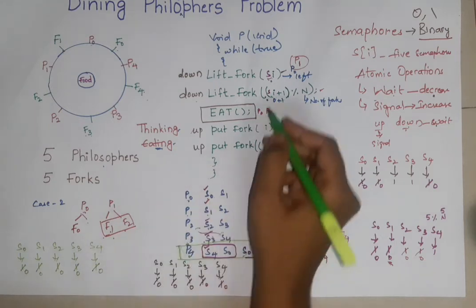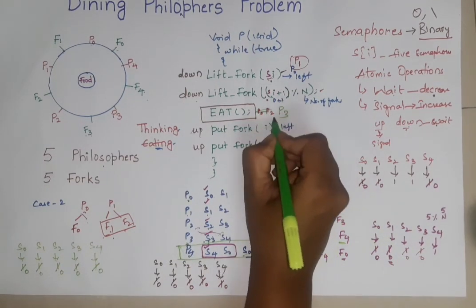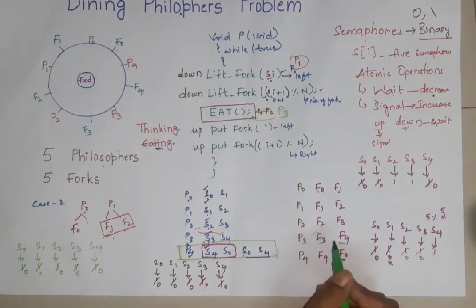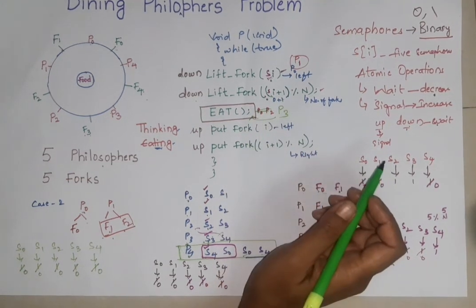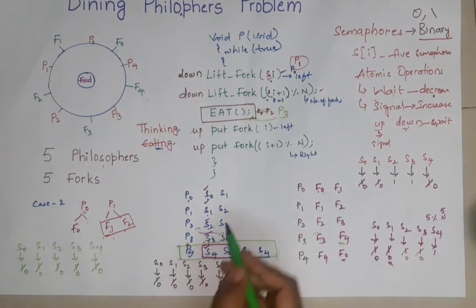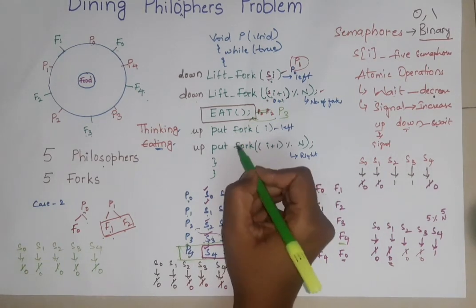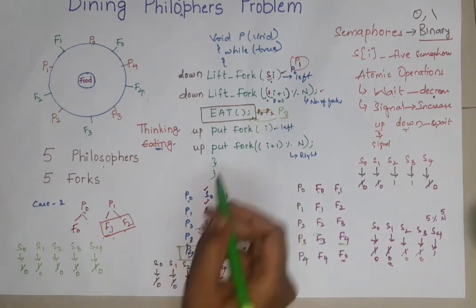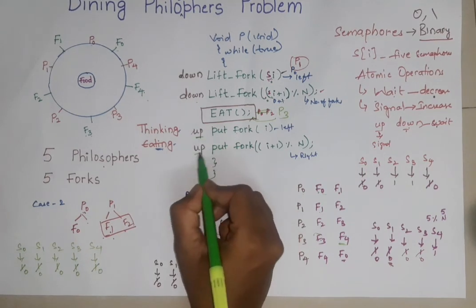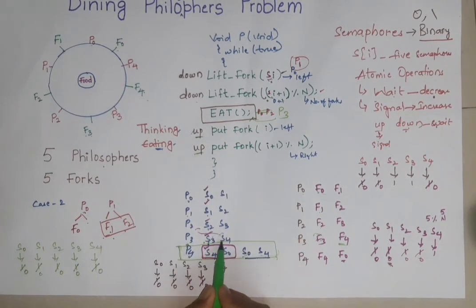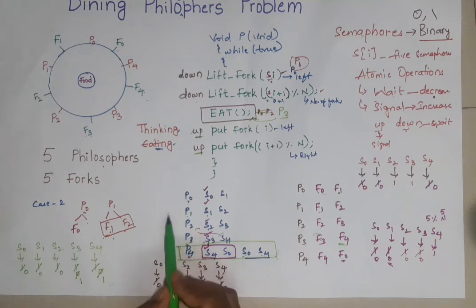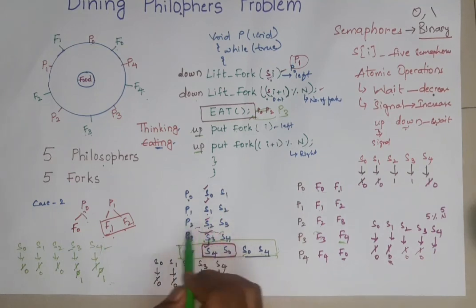Now P3 will be inside the critical section. And after eating what happens? P3 will come out by putting the forks back, by making these values up. What values? S3 and S4. S3, S4 again became 1.